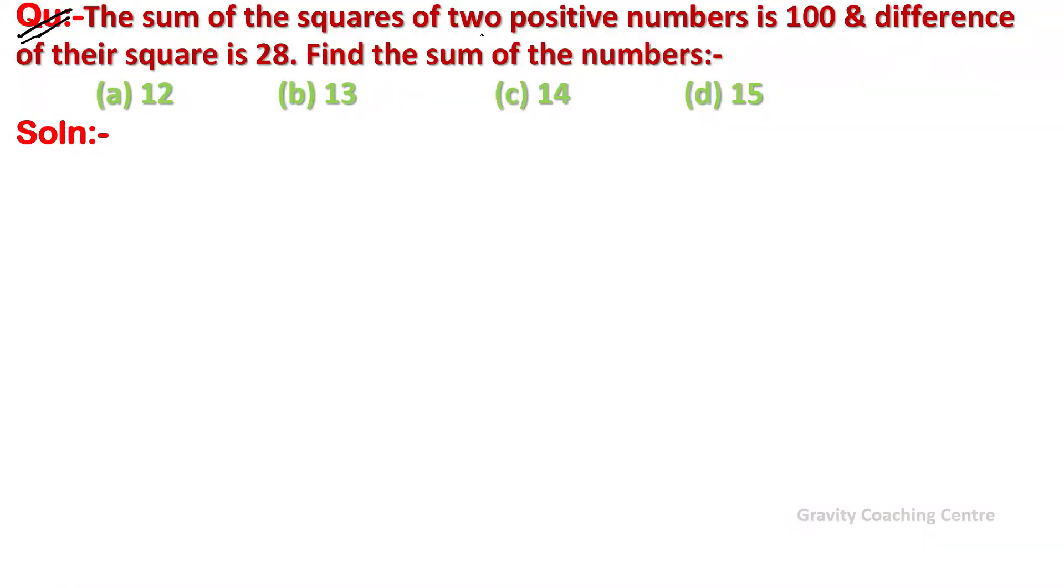The sum of the squares of two positive numbers is 100 and the difference of their square is 28. Find the sum of the numbers. First of all, let the two numbers be x and y.